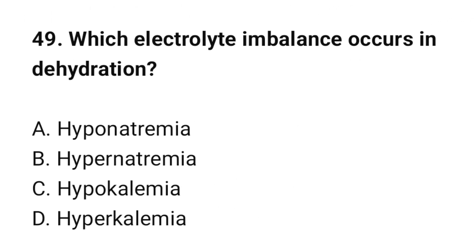Question number 49: Which electrolyte imbalance occurs in dehydration? The correct option is B: Hypernatremia.